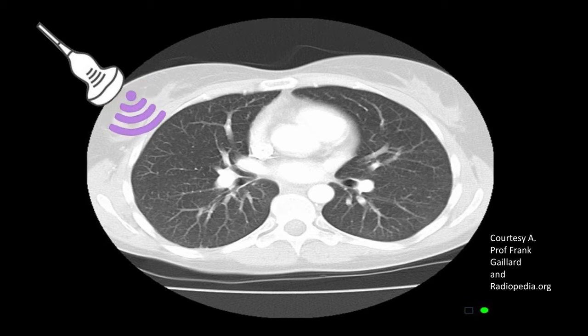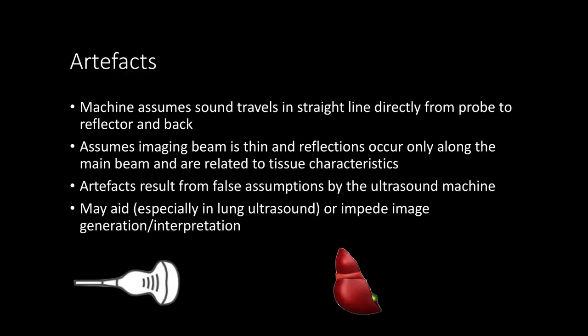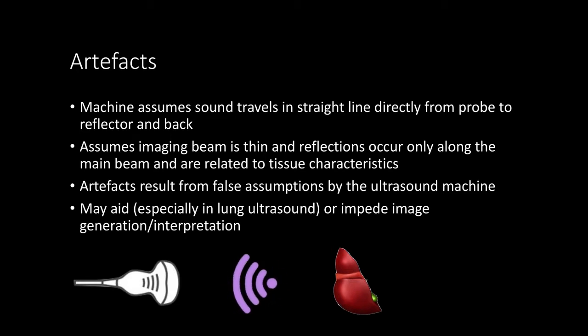Let's go over some of the more important ones now and why they are generated. The ultrasound machine assumes sound travels in straight lines directly from the probe to the reflector and then back again. It also assumes that the imaging beam is thin and reflections only happen along the main beam in a way that is dictated by the characteristics of the tissues it encounters.